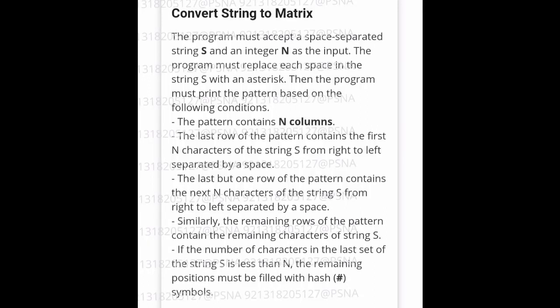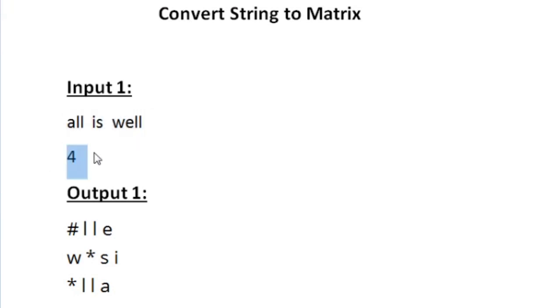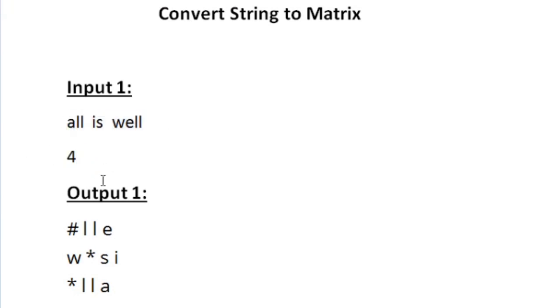This is the question asked in today's skill track daily challenge. Let us see our sample test cases. In the first line of input we are given the space separated string, and in the next line we are given the value of n. Our task is to convert this string into an n-column matrix. Here the value of n is 4, so we must create a 4-column matrix.